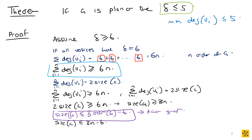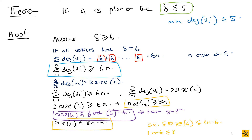Now we have a contradiction: we're saying |E| ≥ 3n, but we also know |E| ≤ 3n − 6. On the number line, 3n − 6 is strictly less than 3n, so these two conditions cannot both hold simultaneously — a contradiction.